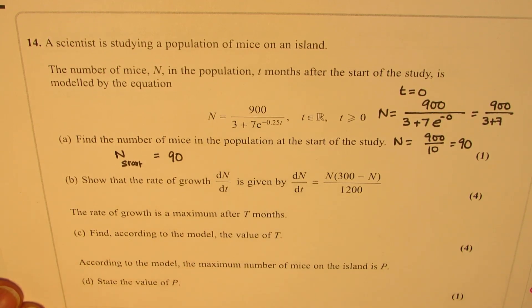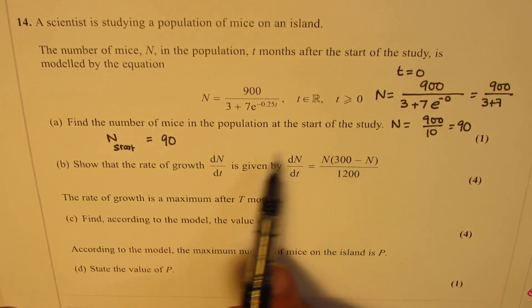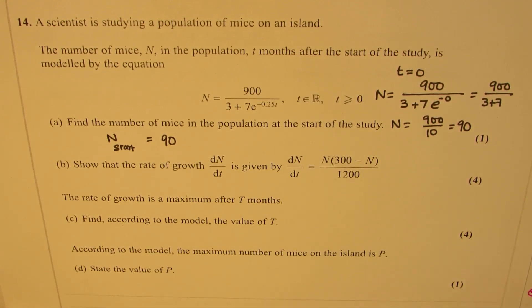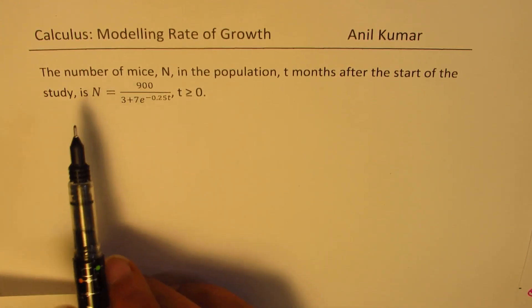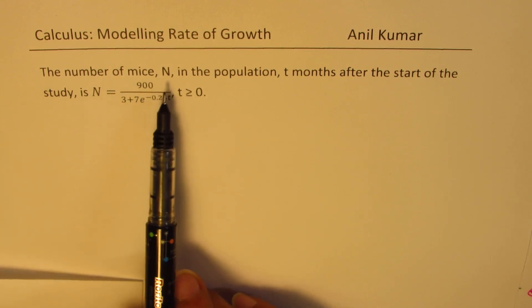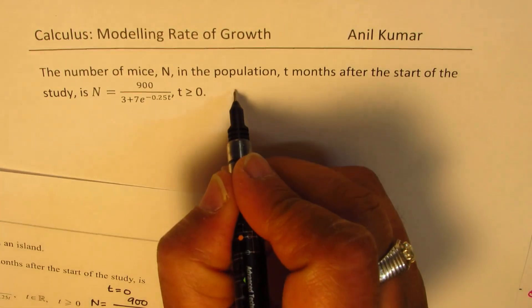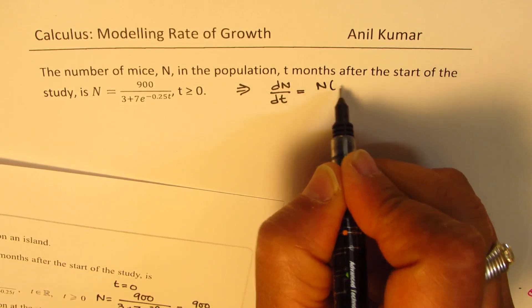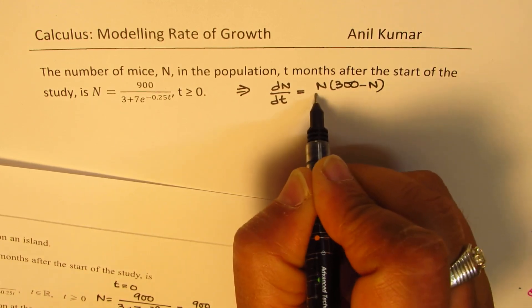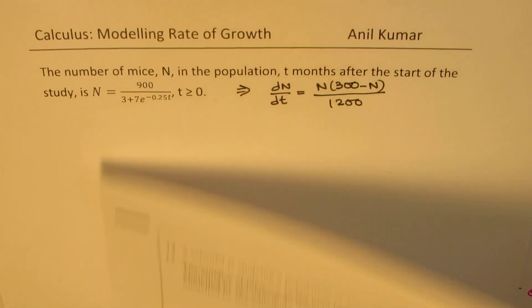Let's find the derivative of the given function on a fresh page. We need to show that the rate of growth dn/dt is given by this particular expression. Let's find the derivative of the given function and then write it in the given form. The number of mice n in the population is n equals 900 over (3 plus 7e to the power of minus 0.25t). We need to show that dn/dt equals n times (300 minus n) over 1200.